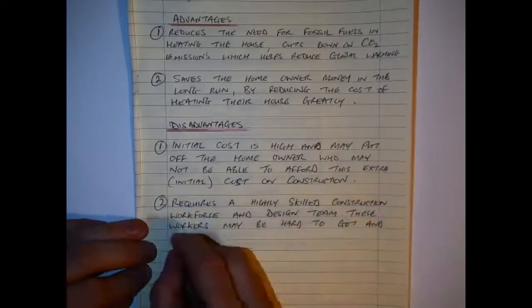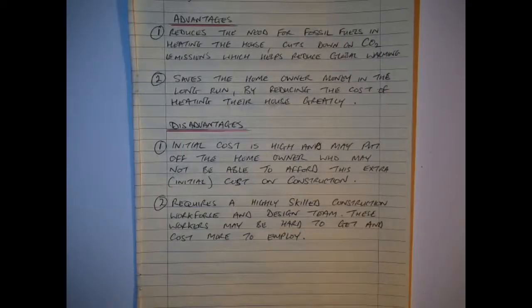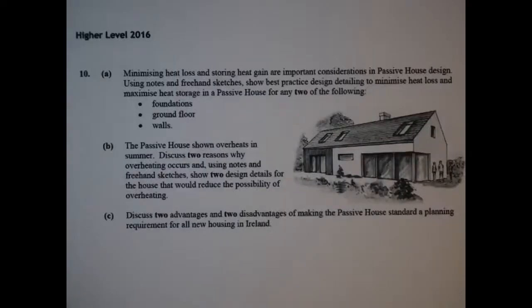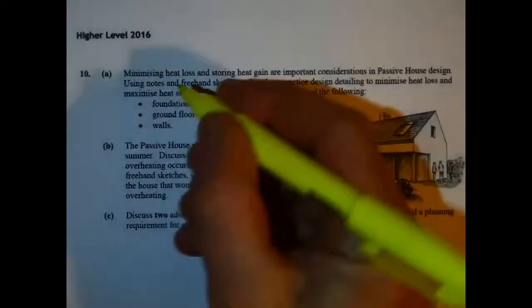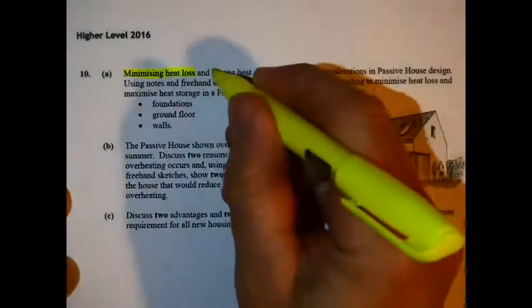So when answering this type of question on passive house, key things are orientation, face south, air tightness, mechanical heat recovery ventilation systems, super insulation, thermal mass, extra insulation, reduced thermal bridges.